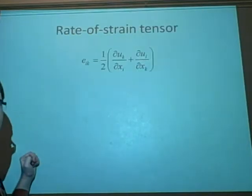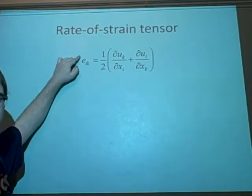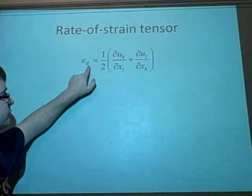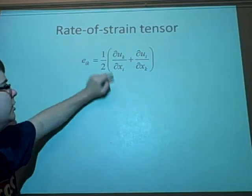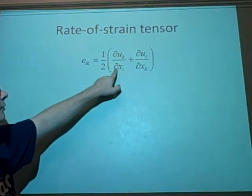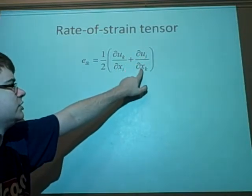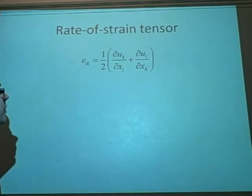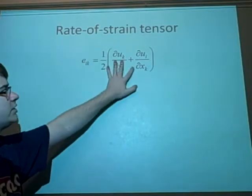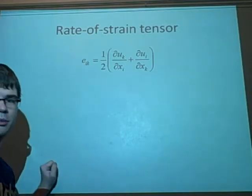Right, on to the rate of strain tensor. It's denoted as e_ik, and this is the formula, which is a half du_k dx_i plus du_i dx_k. And we can use this to calculate the whole table.